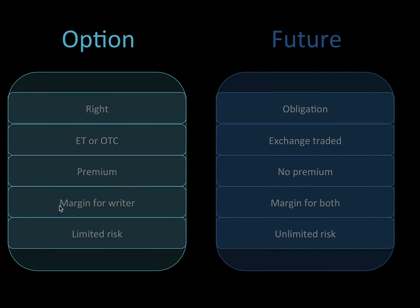This premium allows for a margin for the writer — the person who writes out the option, who you buy it from — they're taking on quite a bit of risk. Whereas with the future, there's going to be risk for both people. With the future there's unlimited risk, but with the option the risk is limited to how much you pay for your premium. Futures are traded on the exchange, as mentioned above, and the option can be both — it can be exchange traded or over the counter.